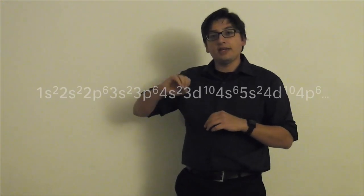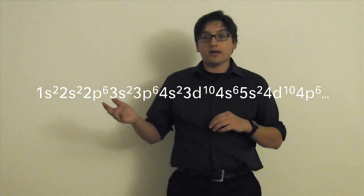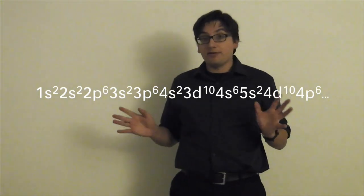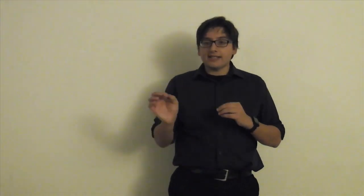The electron configurations are basically—you've seen them in this format before: 1s, 2s, etc. You might have seen that somewhere, and maybe it was confusing and scary. Well, basically, the S, P, D, and F letters—let me erase the little whiteboard here—S, P, D, F.